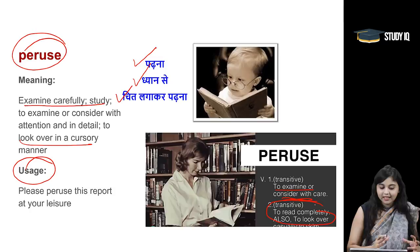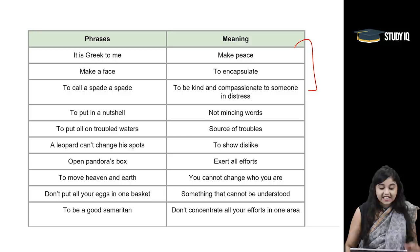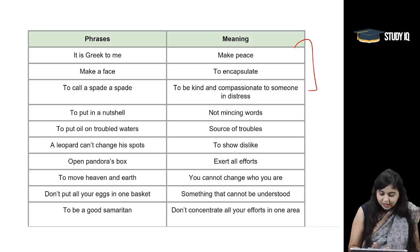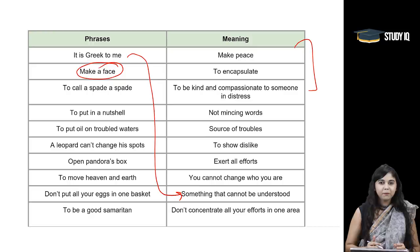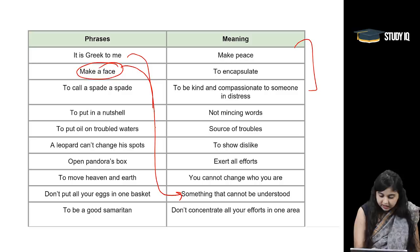Moving on to the quiz of the day. 'It is Greek to me' — koi cheez jo aapko samaj mein nahi aati hai, something that you cannot understand. 'Make a face' — jab aap apna dislike prastut kar rahe hai, when you're not too happy with it. So whenever you're showing your dislike, that is when we use the phrase 'make a face.'